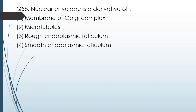Question No. 58: Nuclear envelope is derived from the membrane of — Golgi complex, microtubules, rough endoplasmic reticulum, or smooth endoplasmic reticulum? From where is the nuclear envelope derived? The correct answer is Option 3, rough endoplasmic reticulum.